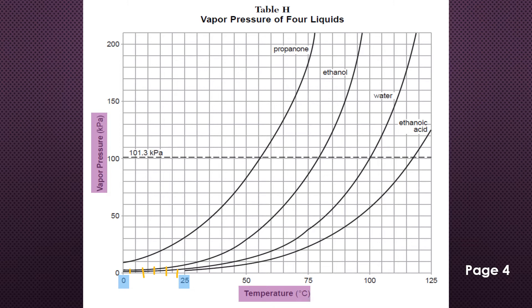Each box on the temperature axis has an interval of 5. Doing the same for the y-axis: we go from zero to 50 with five boxes between them, so we divide 50 by 5 to get an interval of 10. That means each box on the vapor pressure axis represents 10 kilopascals.